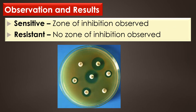Finally, observation and results: if the antibiotic is sensitive, it shows a zone of inhibition around the antibiotic disc. If the antibiotic is resistant, no zone of inhibition is observed around the antibiotic. This result of the antibiotic sensitivity test shows the sensitive result and the resistant result.